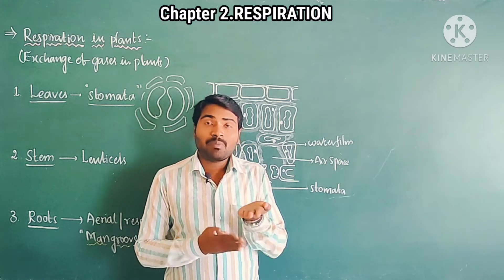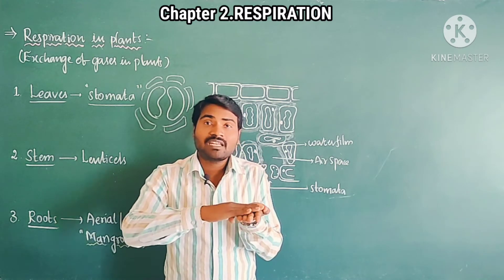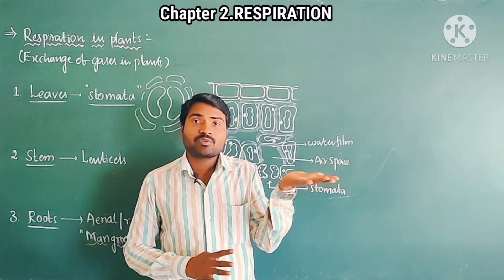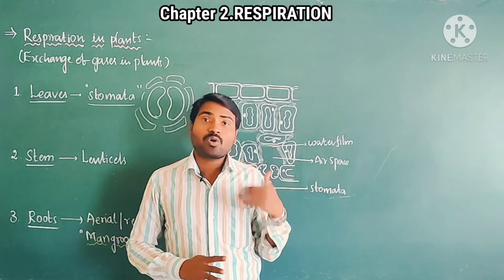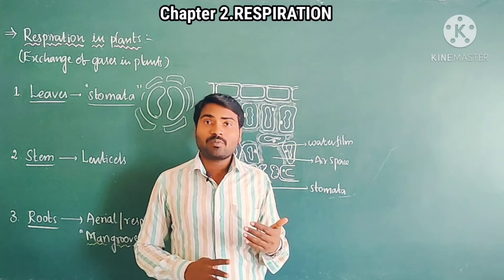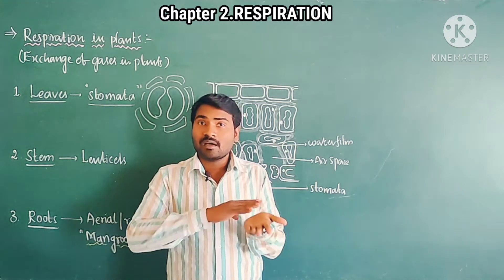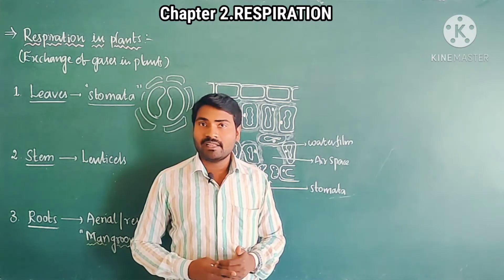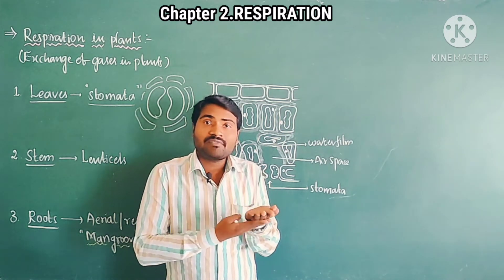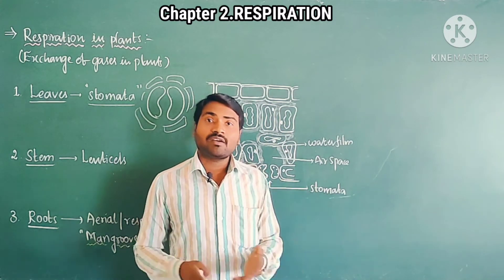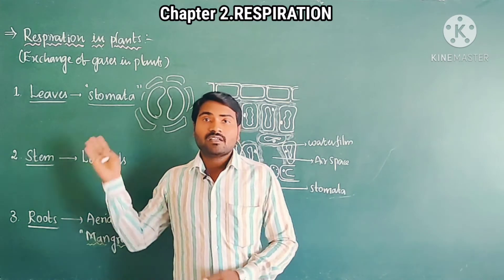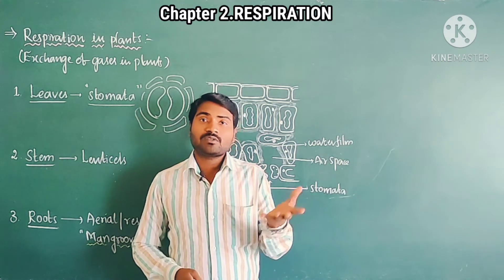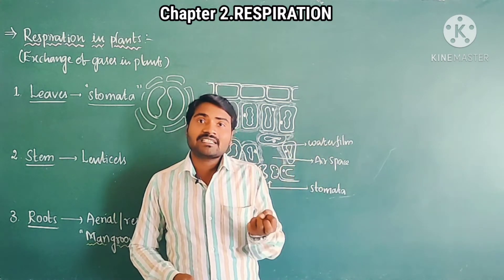The upper surface of the leaf has more number of chloroplasts, while in the lower surface stomata are present. Because the upper surface of the leaf is exposed to sunlight, if more number of chloroplasts are present on the upper surface, they capture more amount of light energy. In the lower surface, there is no need of light energy — hence stomata are present there.